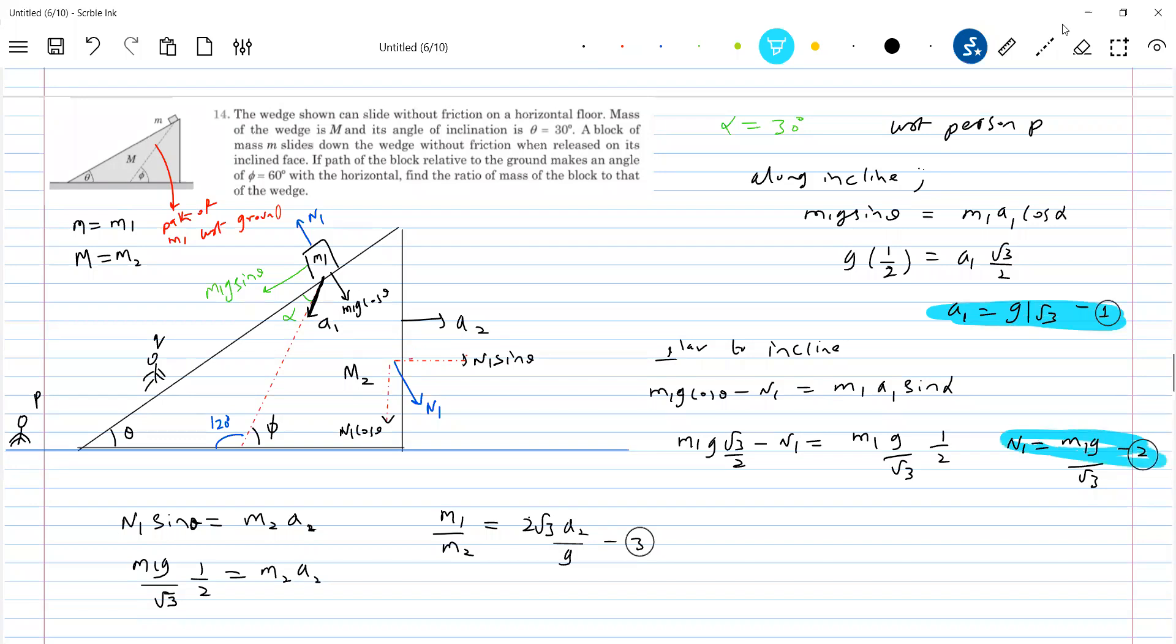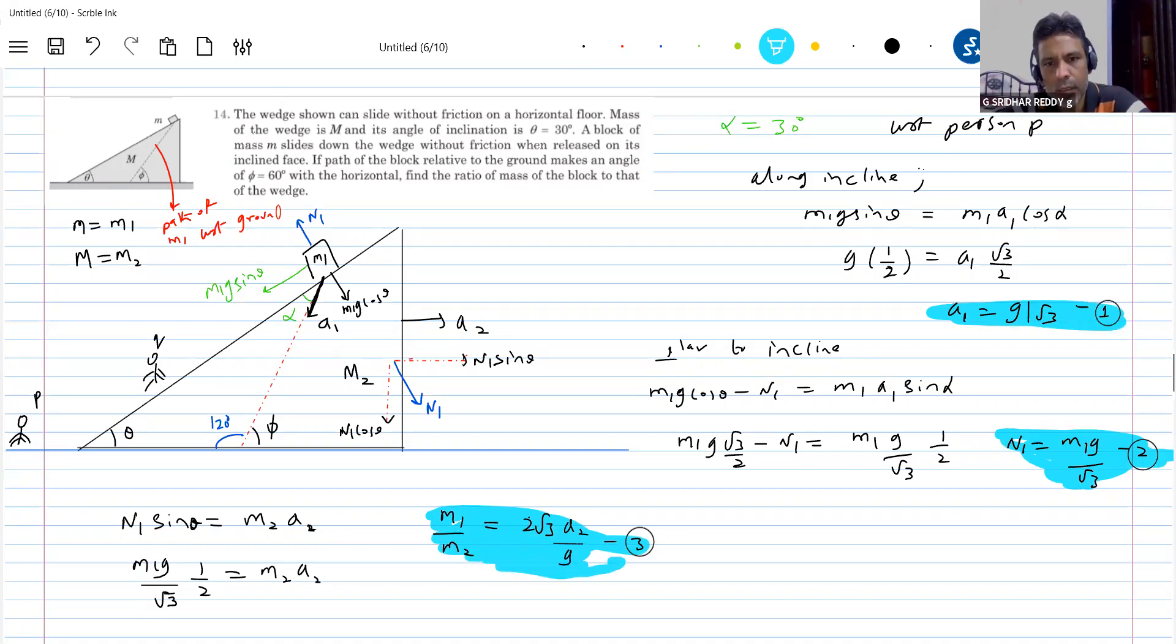What's the final answer, sir? Final answer? Just, I'll give it a little bit. M1 by M2 should be 2. We don't know A2, no? How to bring A2?